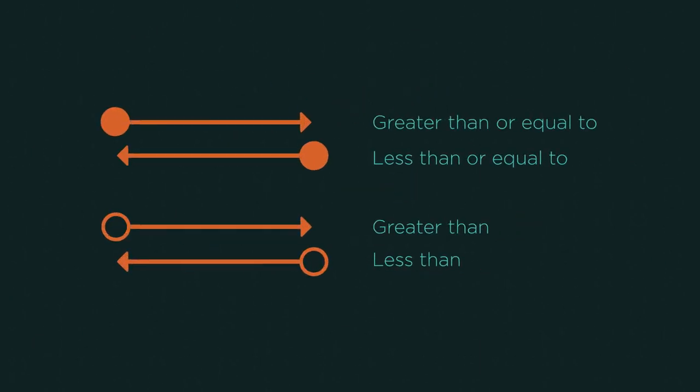An easy way to remember is to think that the full circle also includes or equal to. Hence, it is complete. It includes everything. The hollow circle is just more than or less than. It's missing the or equal to and so is hollow.